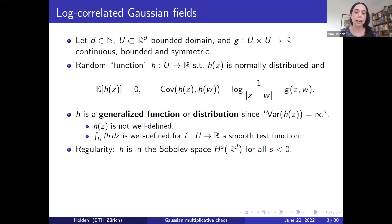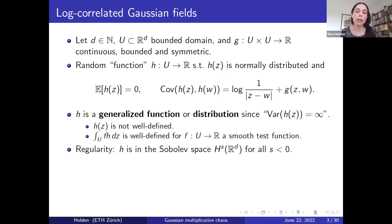It is possible to argue that h is almost surely an element in the Sobolev space H^s of R^d for any s strictly smaller than zero. Recall that H^s is simply equal to L^2 when s equals zero, so h almost has the regularity of a function in L^2, but not quite.